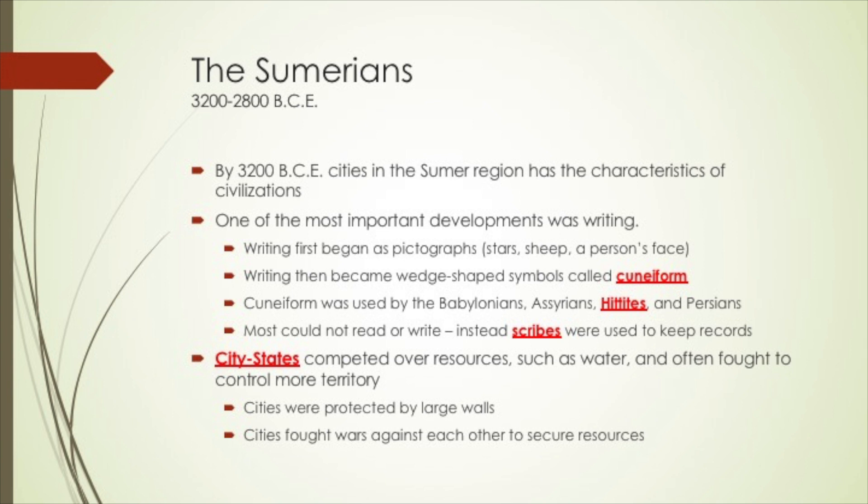Throughout the history of Mesopotamia, there were a number of different civilizations that formed. The first were the Sumerians, who formed around 3200 BCE. By that time, cities in the Sumer region had all the characteristics of civilizations that we talked about earlier.